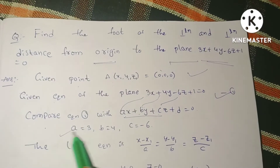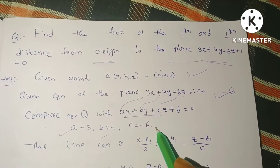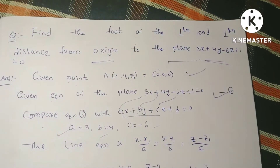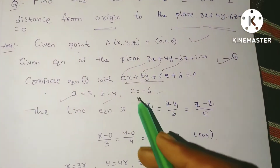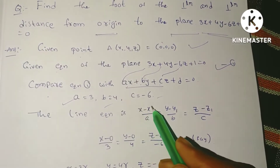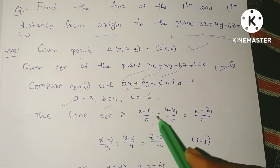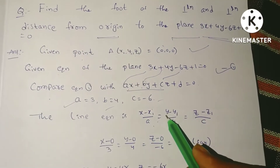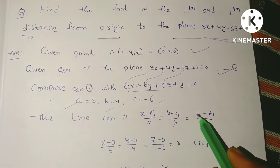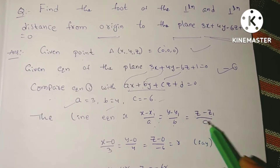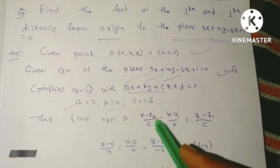We can now write the parametric line equation through the point (X1, Y1, Z1) with direction ratios (A, B, C): (X - X1)/A = (Y - Y1)/B = (Z - Z1)/C = R.